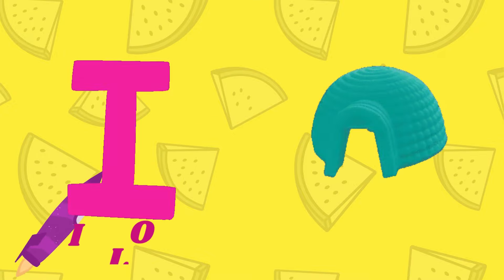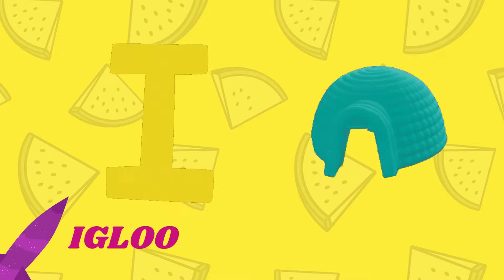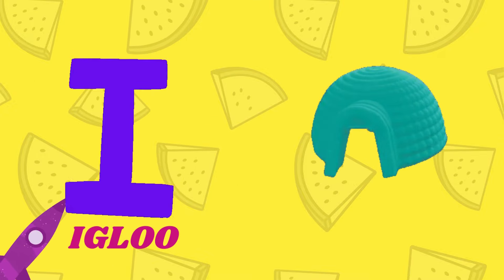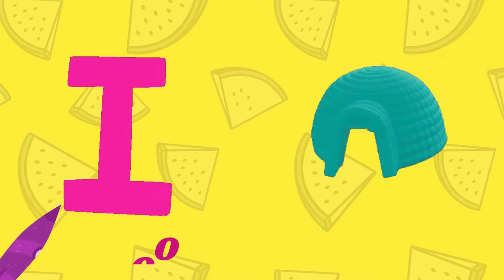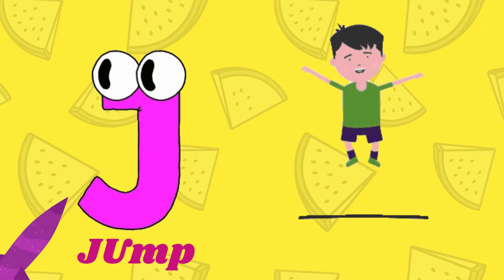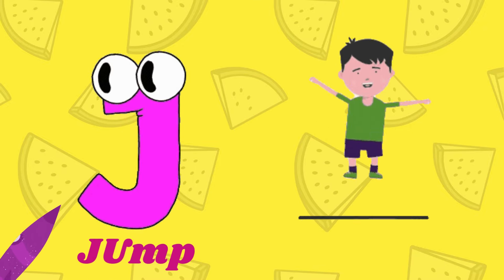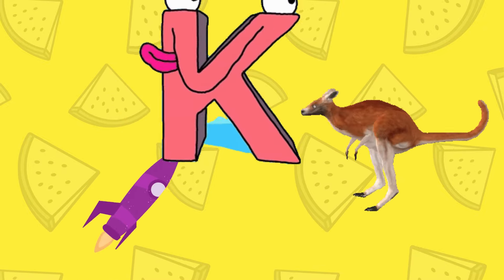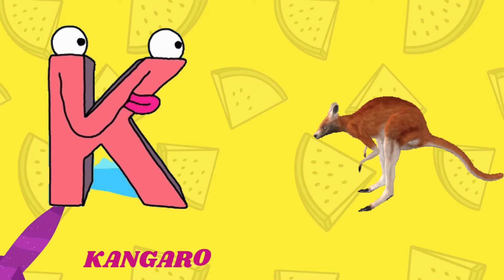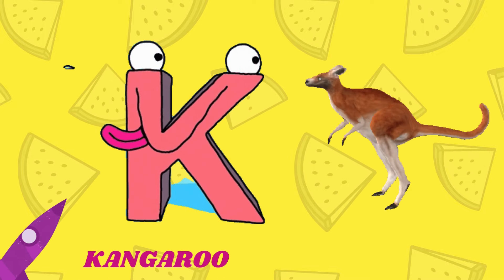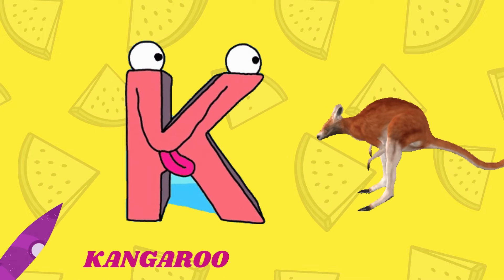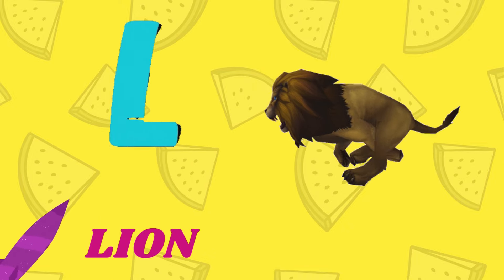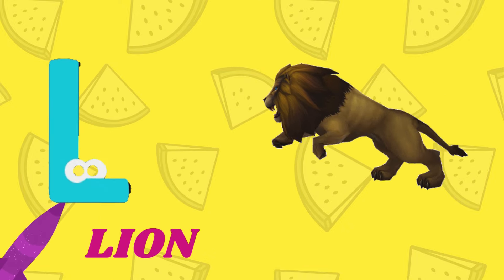I is for Igloo, I-I-Igloo. J is for Jump, J-J-Jump. K is for Kangaroo, K-K-Kangaroo. L is for Lion, L-L-Lion.